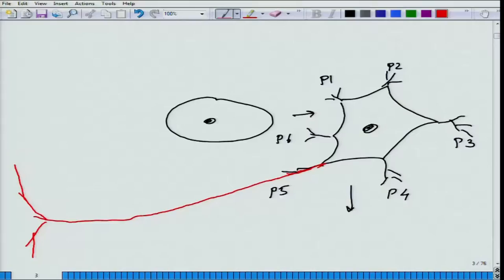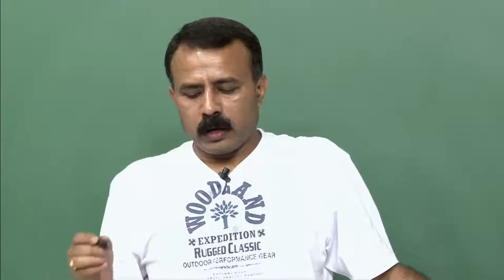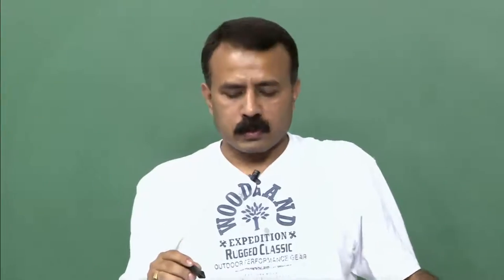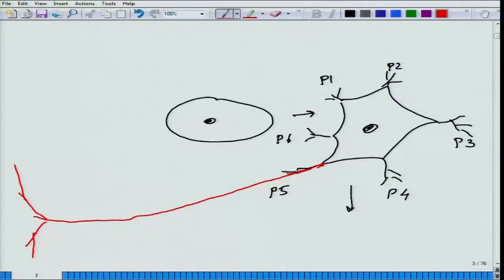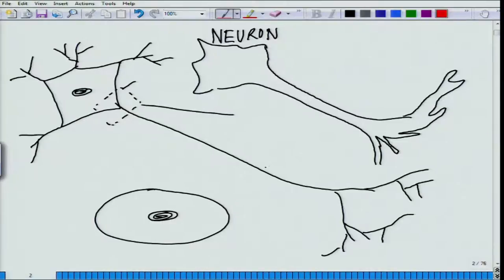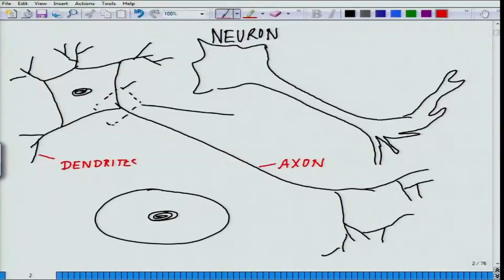We will not go in depth on that aspect here because that is not under the purview of this course. What we will do is give them different names. This longer process is called the axon — A-X-O-N — the longer one. These smaller processes are called dendrites, and these dendrites form a huge mesh or network.